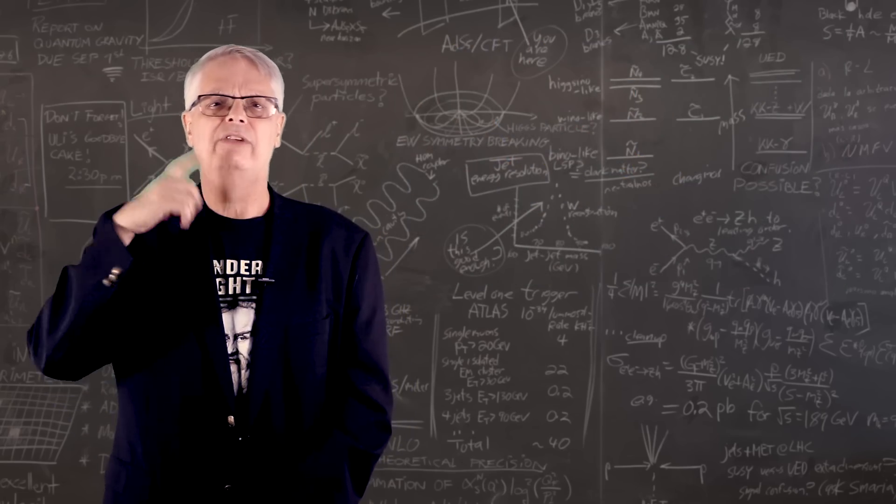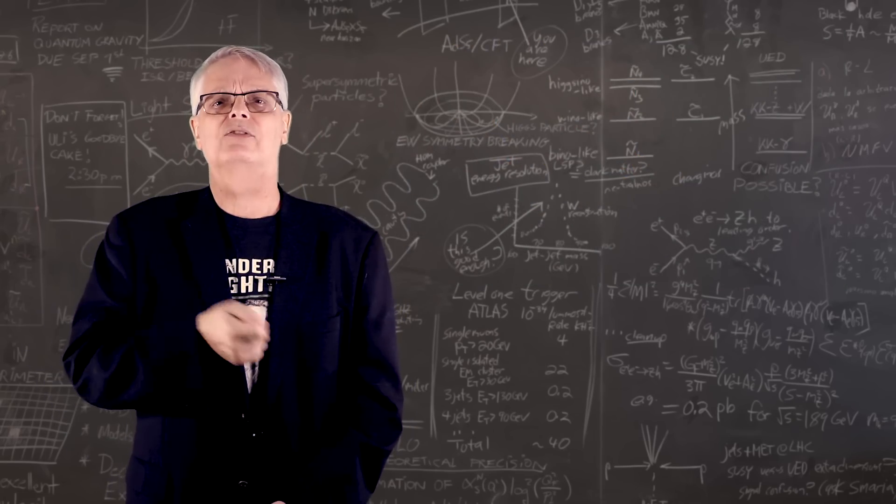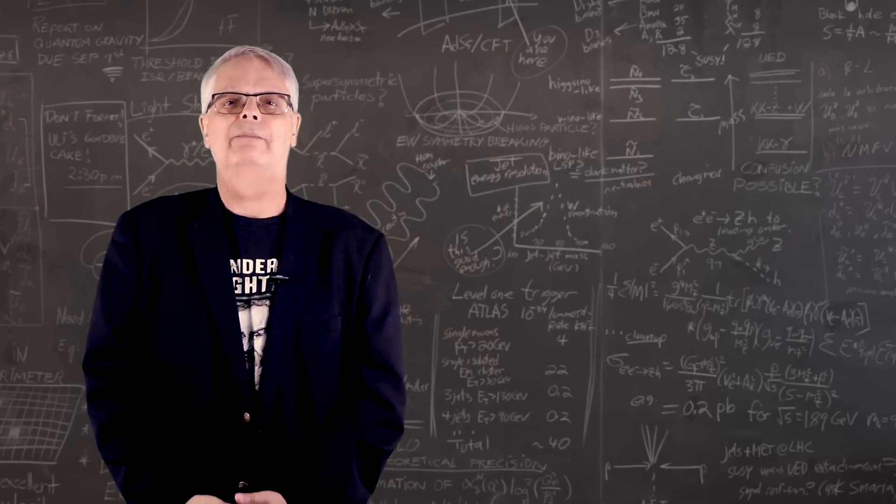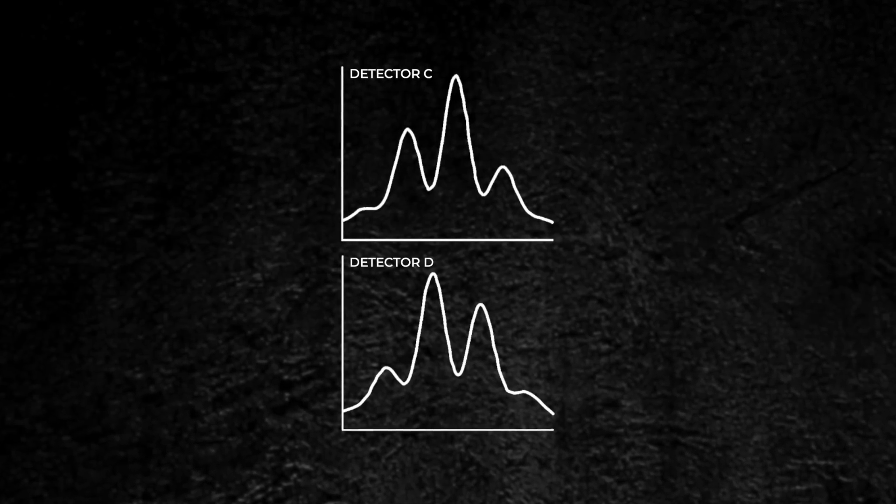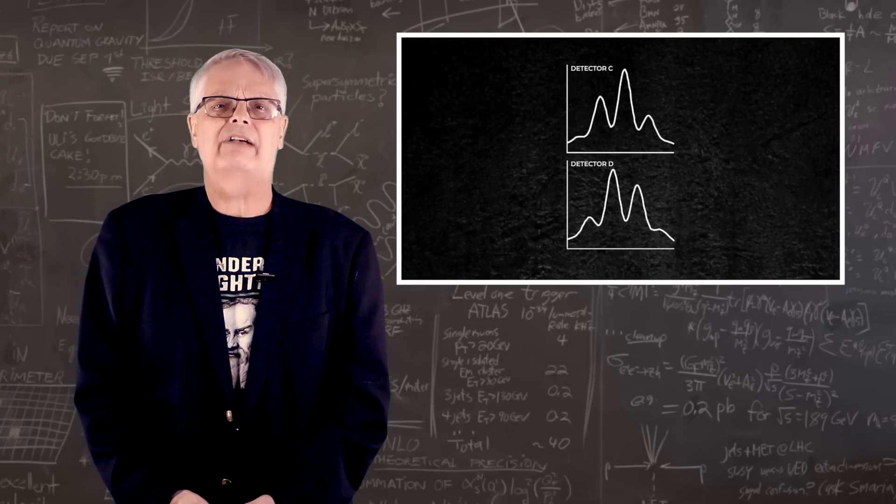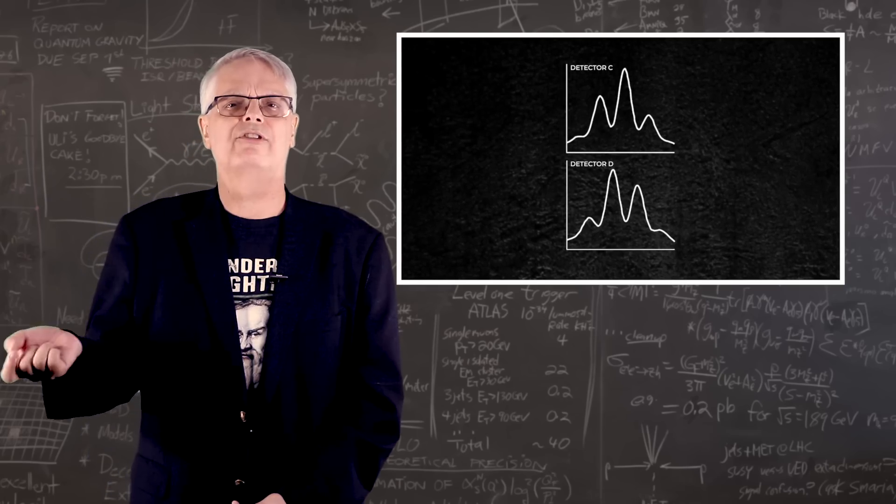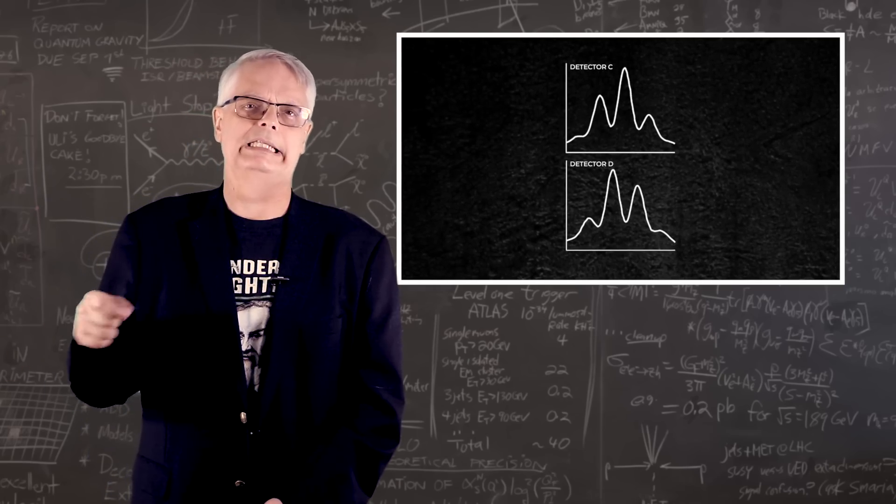So what happens if you turn off detectors A and B and look at only C and D? Since the detectors don't tell you which slit the photon went through, it once again acts like a wave. But C and D are a little offset, so you see the interference pattern only when you look at C and D separately.